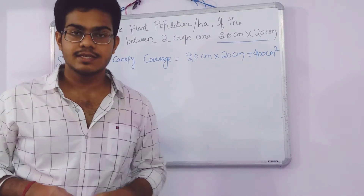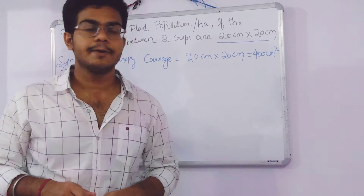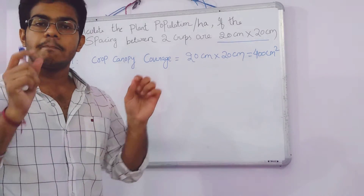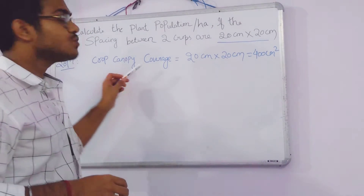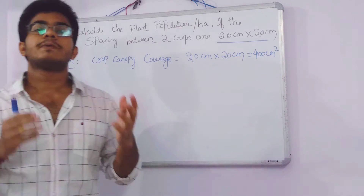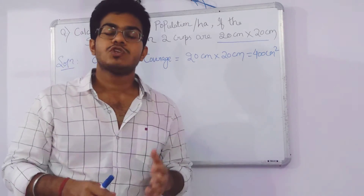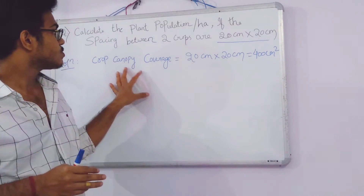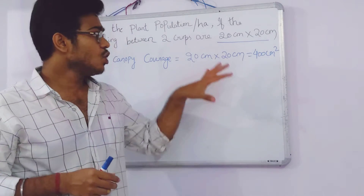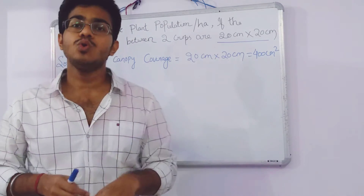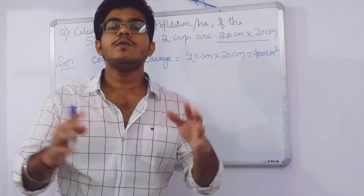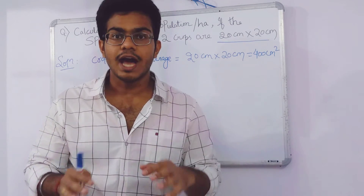Here I have solved part of it. First, we have to calculate the crop canopy coverage or crop canopy area. Why do we need to calculate this? It is because we have to know how many plants are present in a meter square of land.